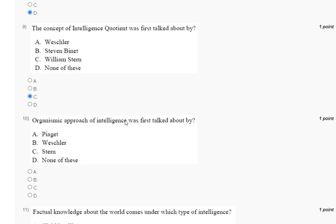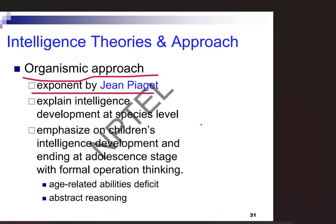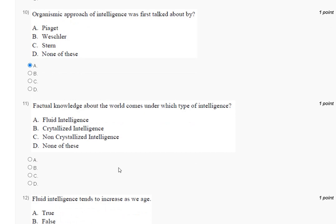Question number ten: the organismic approach of intelligence was first talked about by whom? The explanation is here. The organismic approach was proposed by Jean Piaget. So the correct answer to question number ten is option number A.